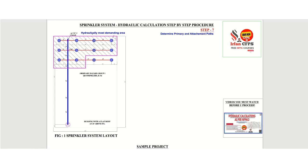We are moving forward with step seven. In step seven, we are going to determine the primary path and attachment paths. Before we discuss about primary and attachment paths, we need to draw the isometric for this particular hydraulically most demanding area.